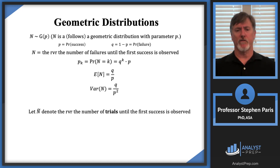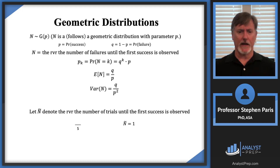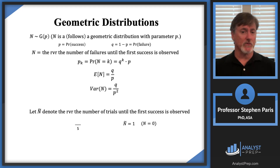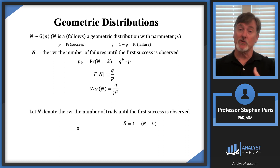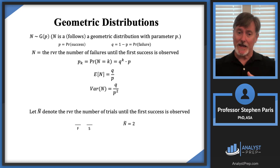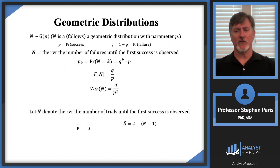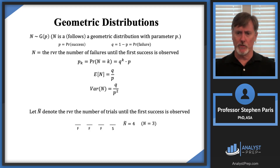Let Ñ denote the number of trials until the first success. If Ñ = 1 it means there was one trial and that first trial was a success, which corresponds to our N = 0. If Ñ = 2, that means the first success ended on the second trial — the same as saying there was one failure before the first success, so our N = 1. Likewise, Ñ = 3 corresponds to our N = 2, and so forth. In other words, Ñ = N + 1, and the support of Ñ is 1, 2, 3, 4, and so forth.